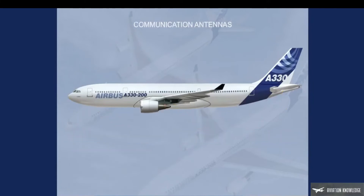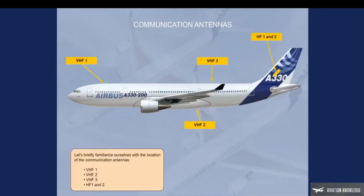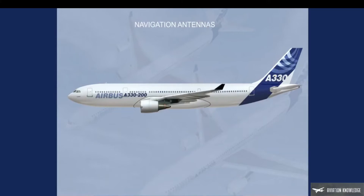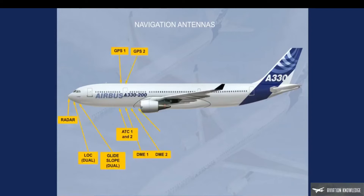Let's briefly familiarize ourselves with the location of the communication antennas. Now let's have an overview of the location of the navigation antennas: Radar; Localizer and glide slope; ATC 1 and 2; DME 1 and 2; GPS 1 and 2; Marker; TCAS; ADF 1 and 2; Radio altimeter 1 and 2; and VOR.